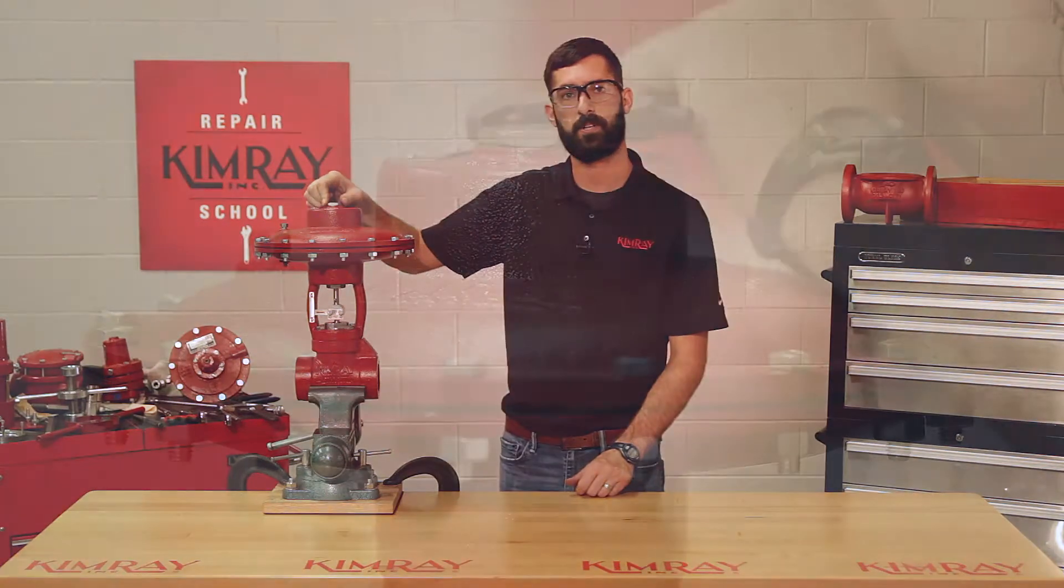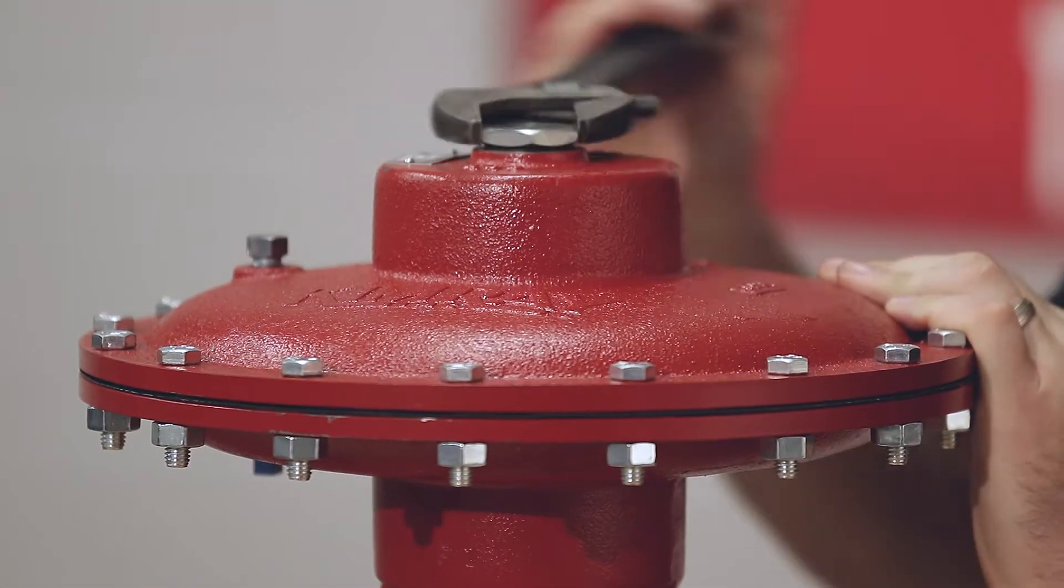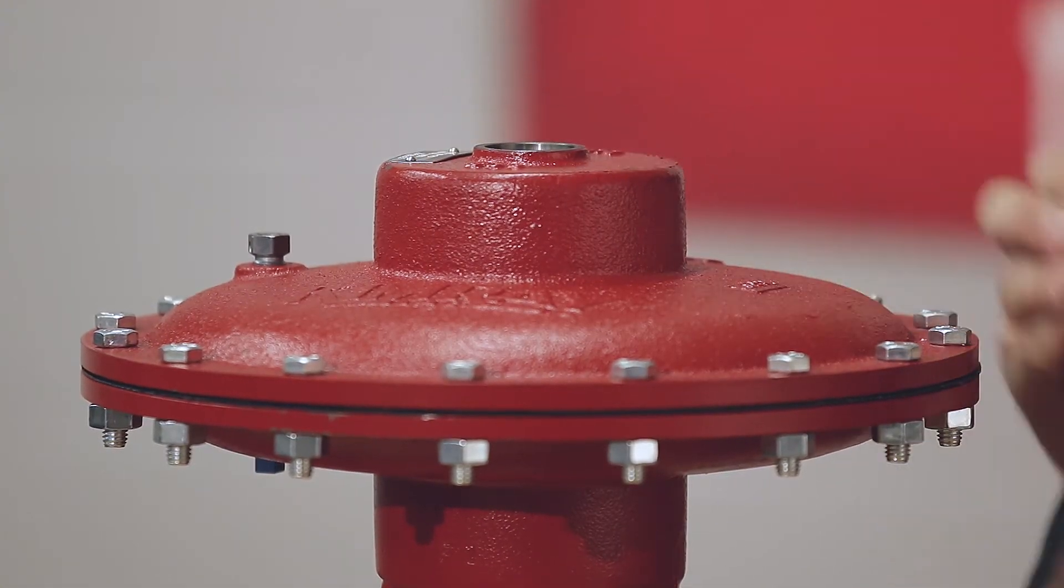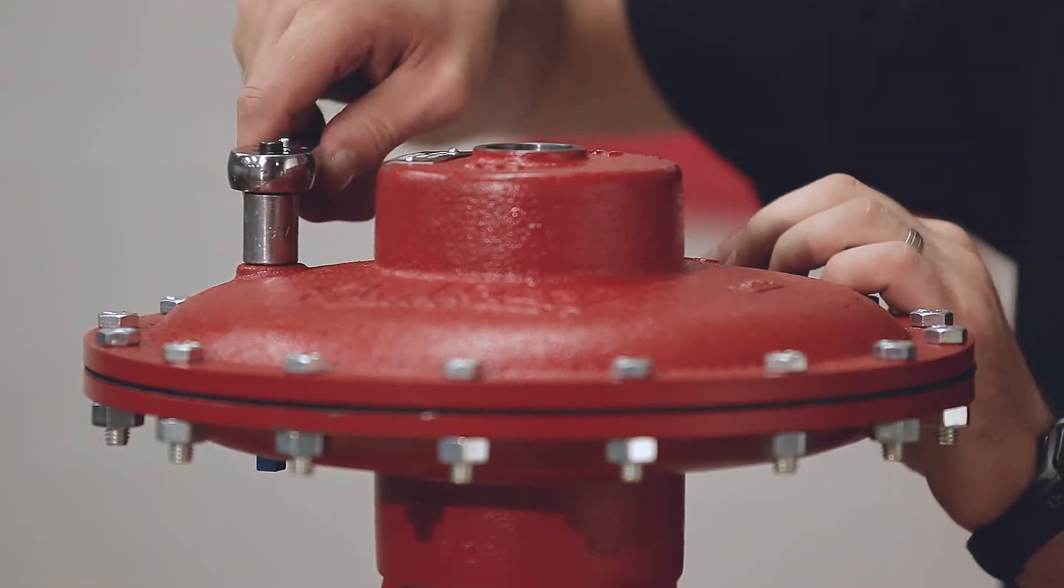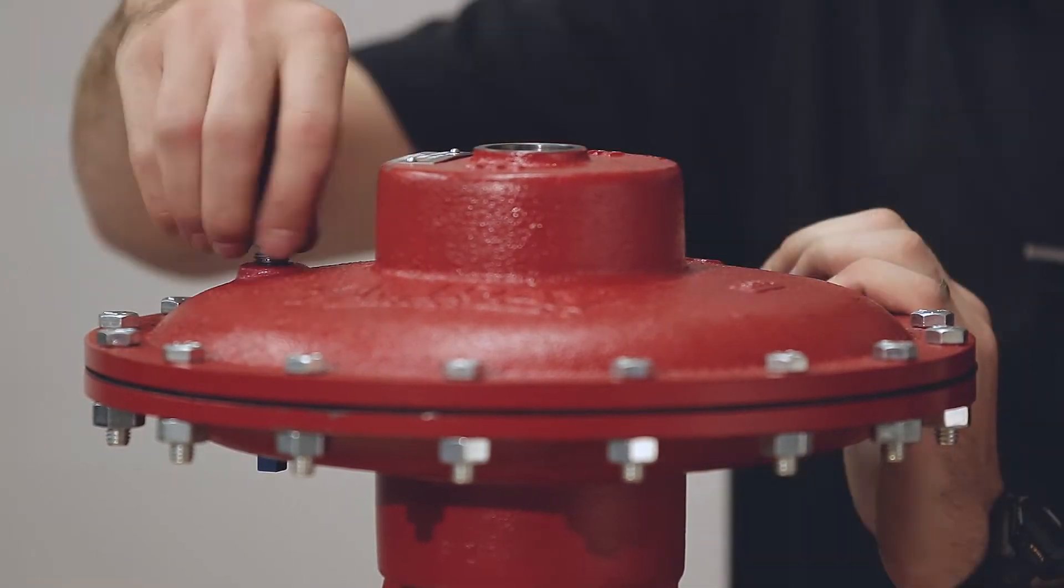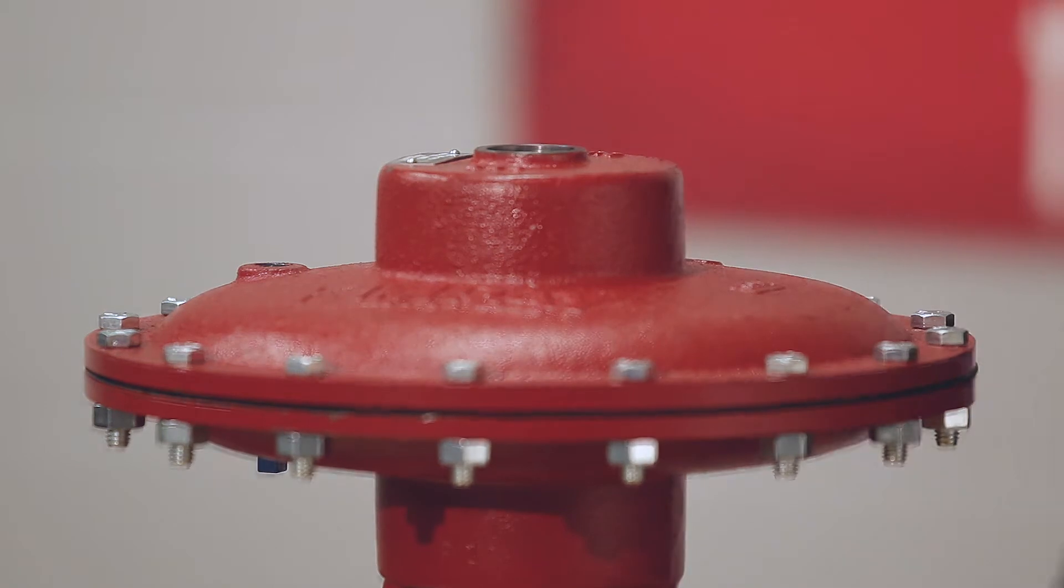We'll get started by removing our upper adjustment screw and breather plug. Then you'll remove all of your upper bonnet bolts.